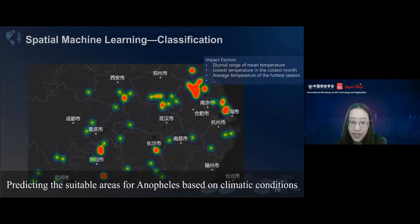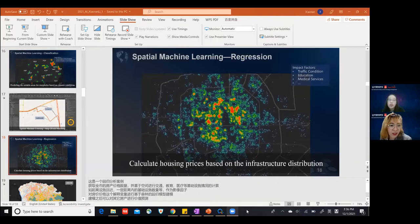Classification can help us predict the suitable area for Anopheles based on climatic conditions. We take several factors into consideration, like the diurnal range of mean temperature, the lowest temperature in the coldest month, the average temperature of the hottest seasons. So with the help of those factors, we can predict suitable areas.